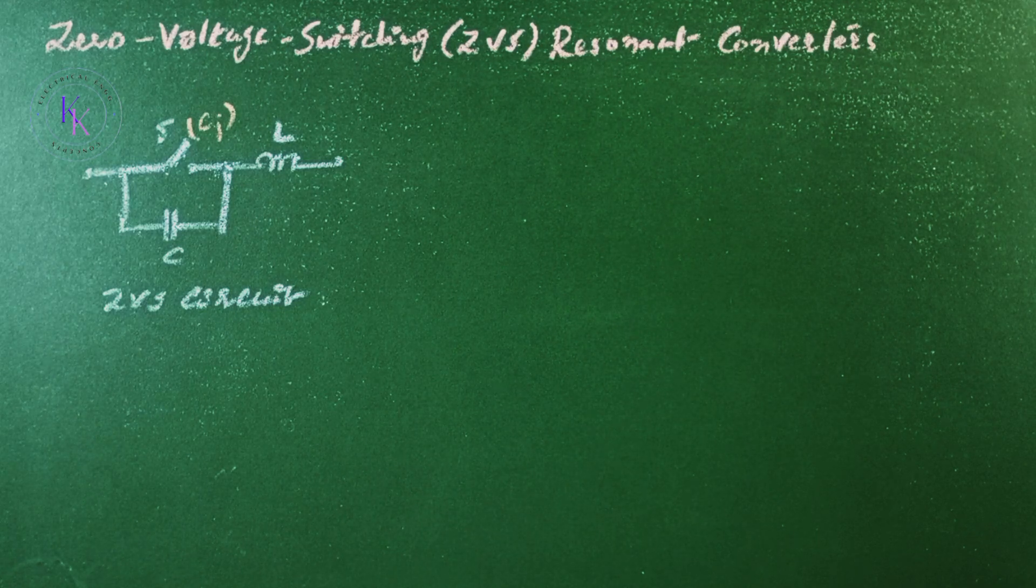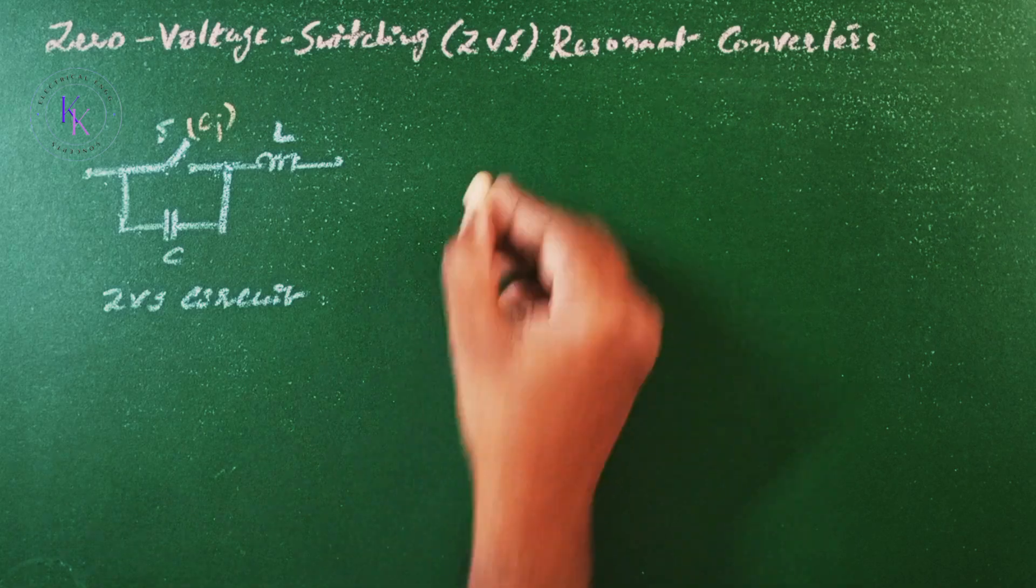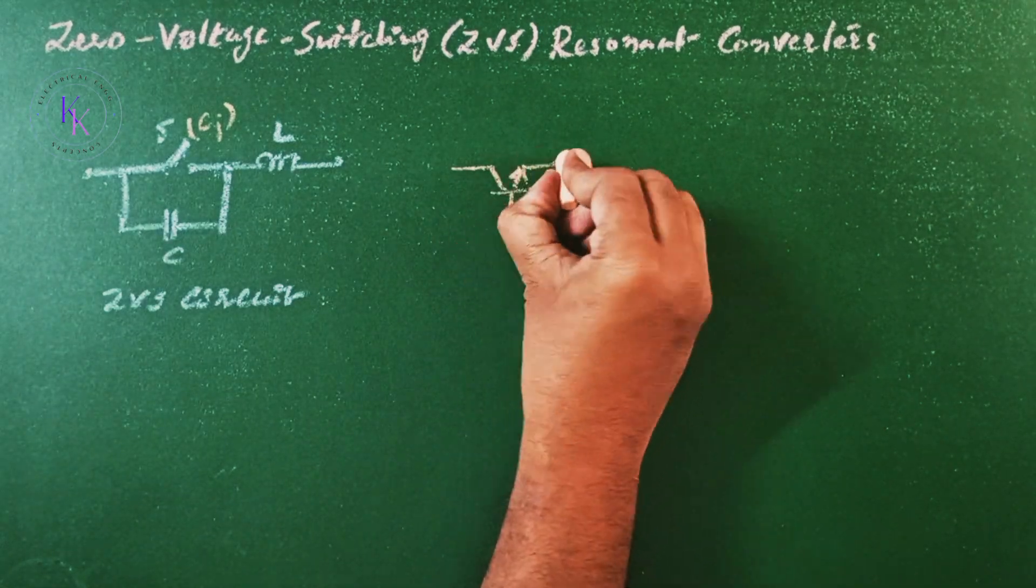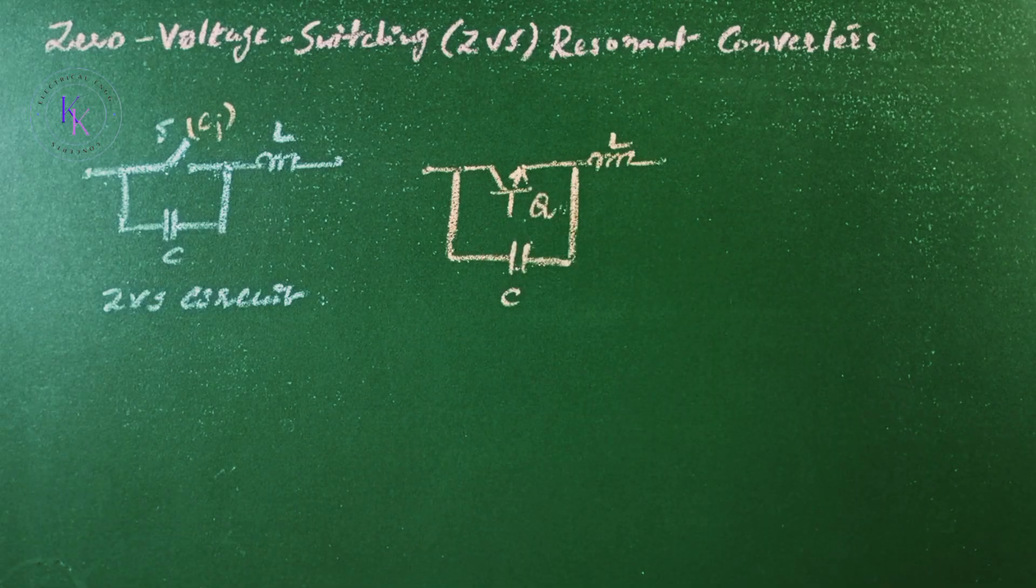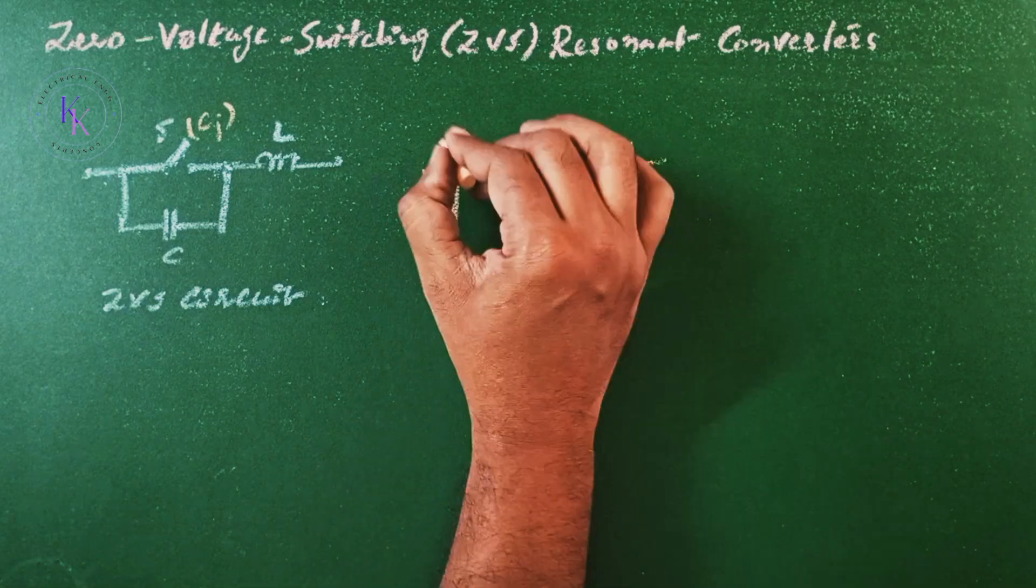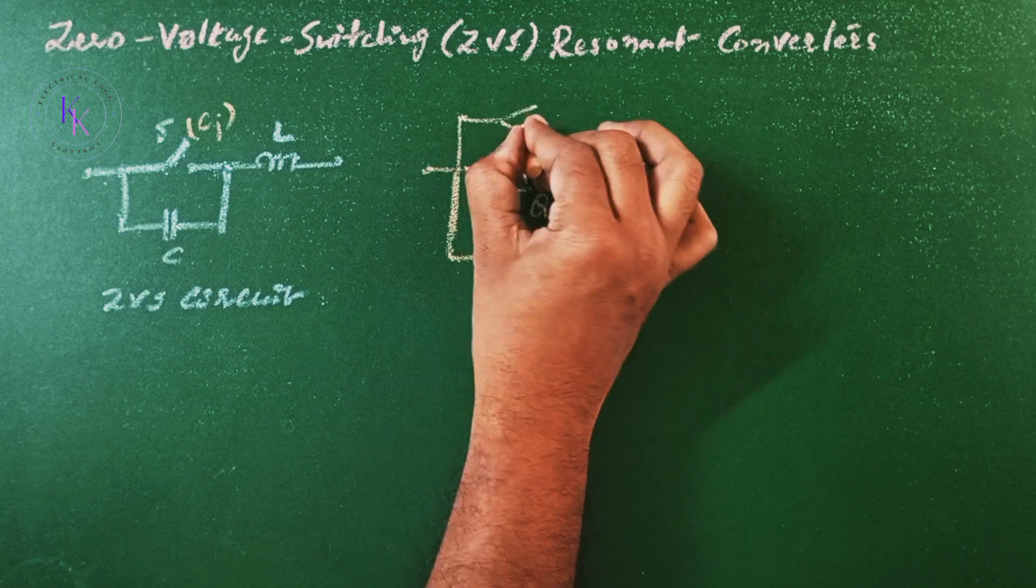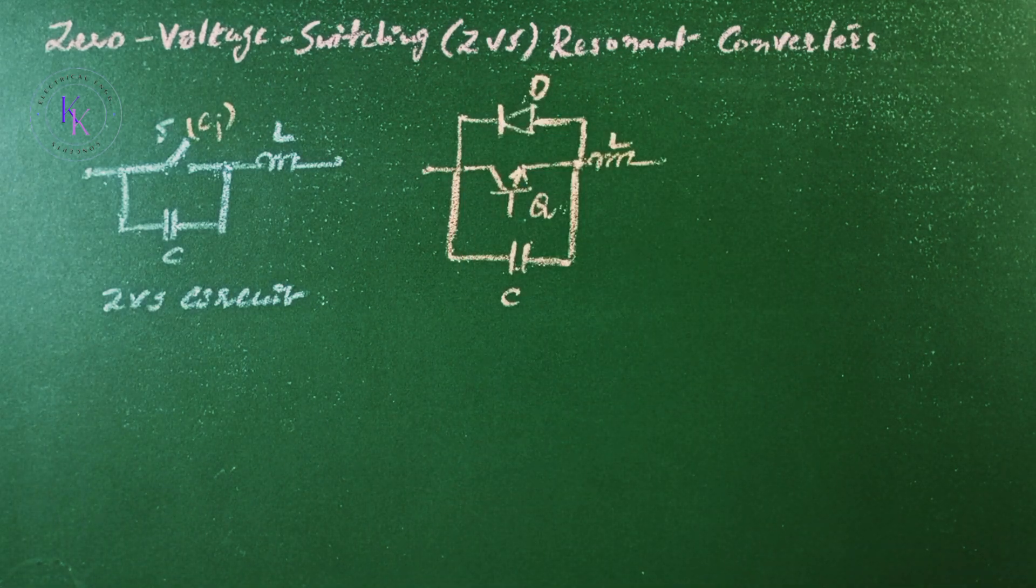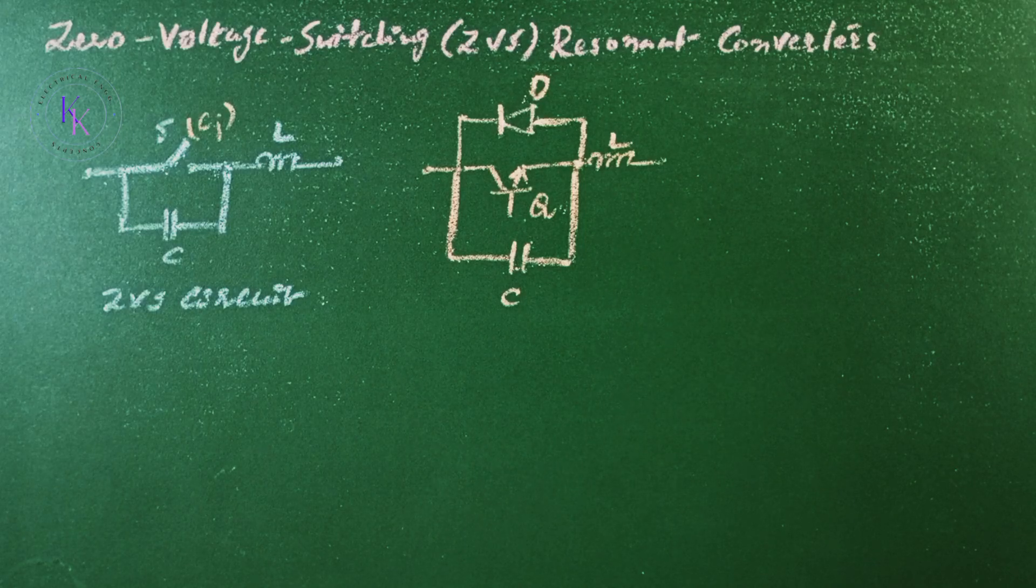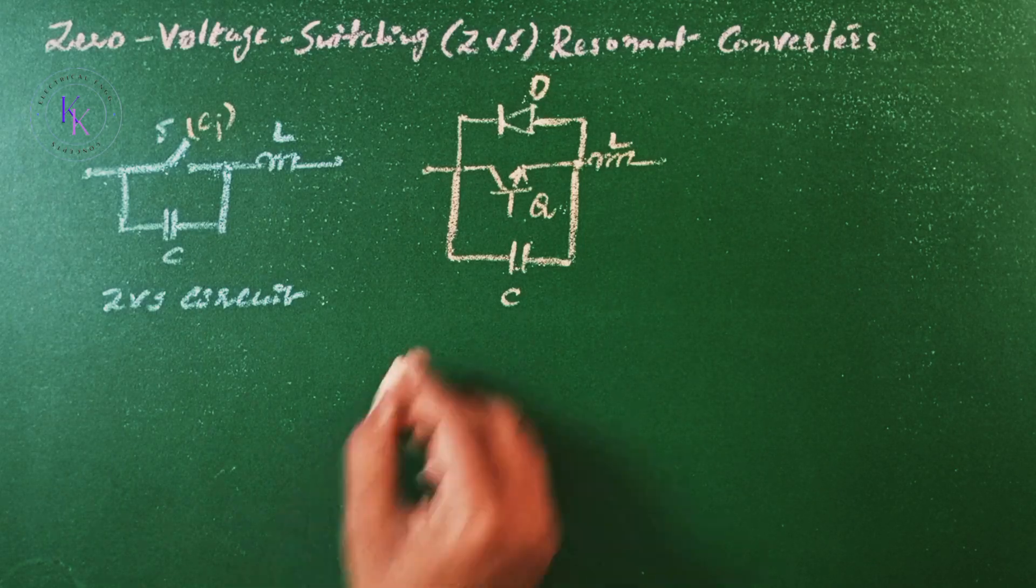If this switch is a transistor and an anti-parallel diode D is connected to this, then the voltage across the C is clamped by the diode D and the switch is operated in half-wave configuration.